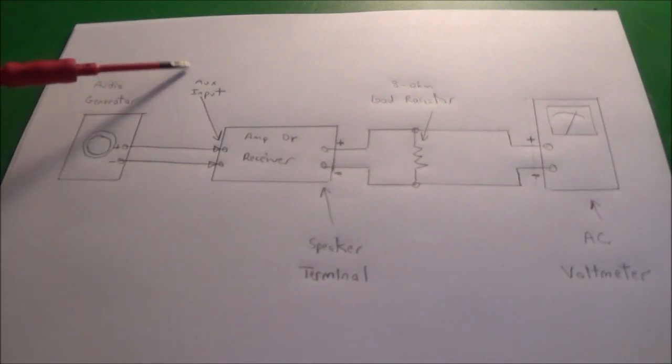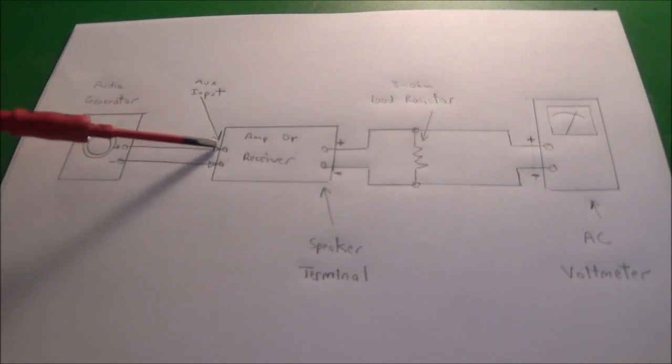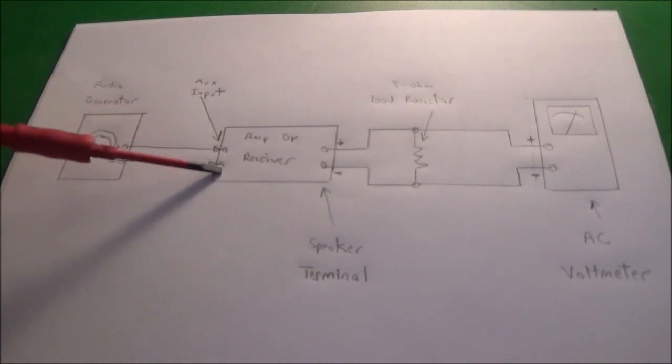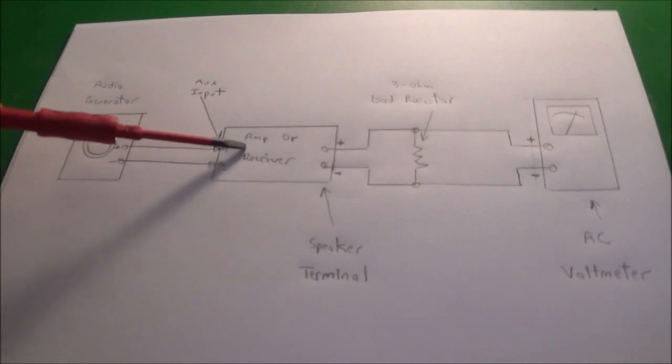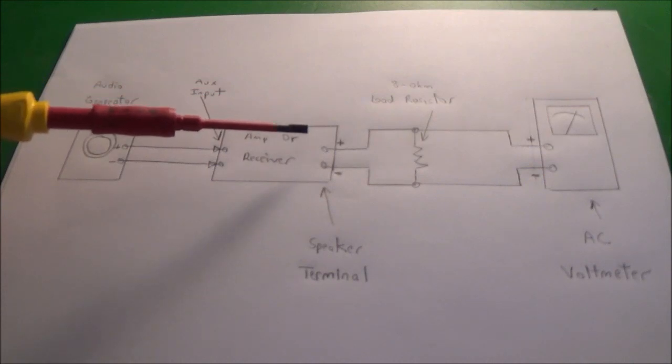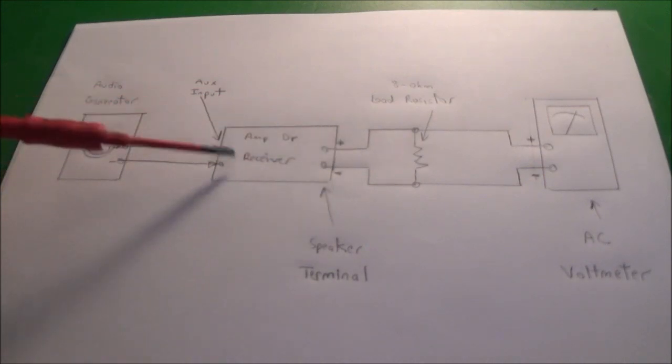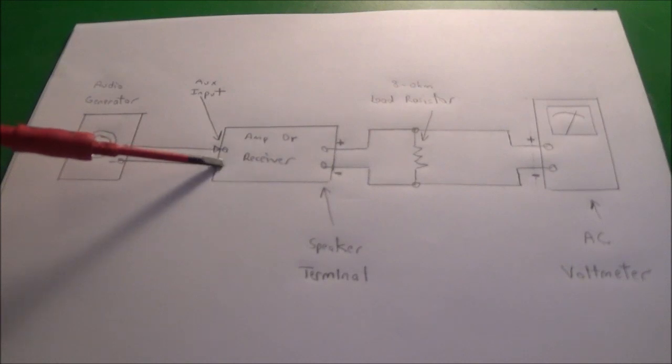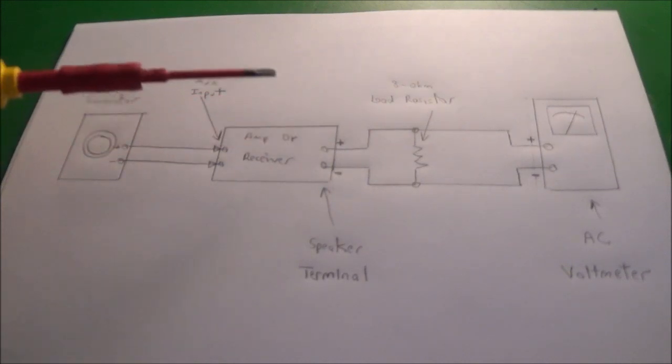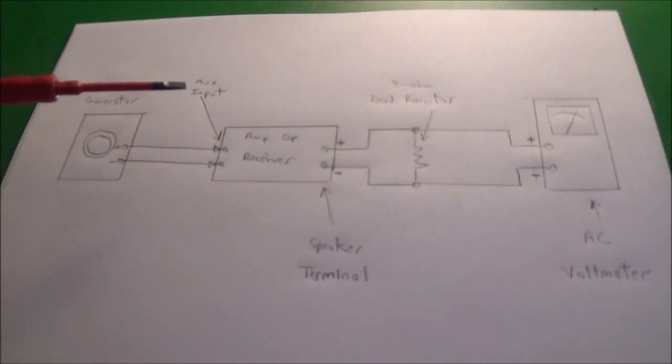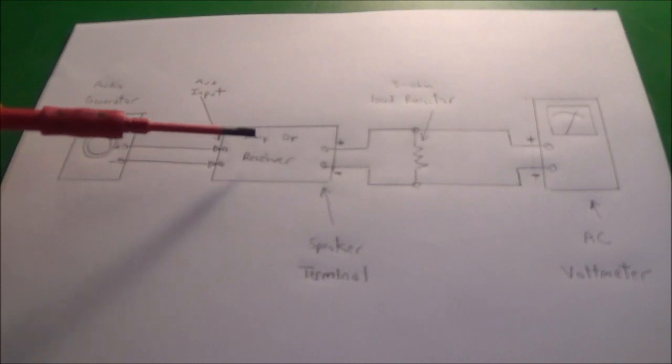If you have a record player hooked up to the receiver, the signal coming into the amp or receiver is going to be manipulated - there's circuitry in there. What we're doing, we want something coming straight into the amp section and going out. We want to see the frequency response. Of course here this is the amp or receiver.